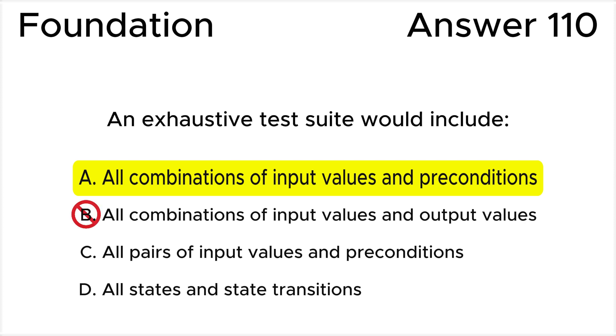All the rest of the answers are wrong. Answer C is wrong because pairwise testing using input values and preconditions is a specific subset and doesn't cover all combinations.